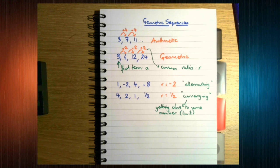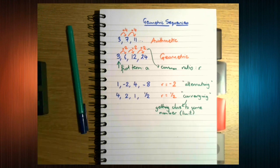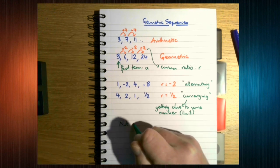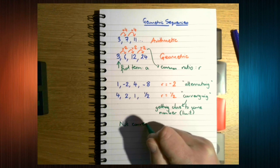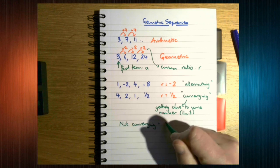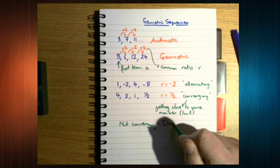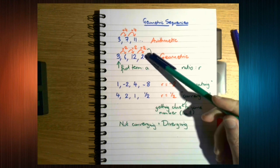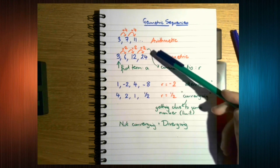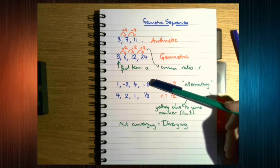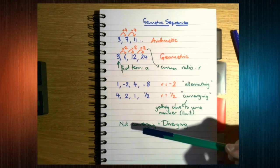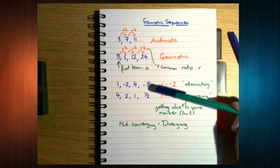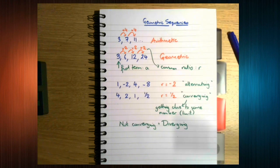If a sequence is not converging, then we say it is diverging. So these two geometric sequences here are both diverging. They are not getting closer and closer to a particular number. They are just getting bigger and bigger. Or in this case flipping further and further away from zero.